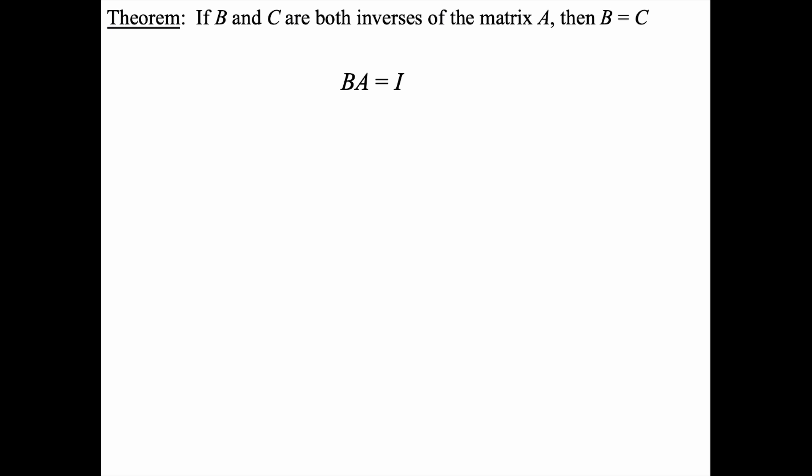Well since we're told that B is an inverse, if we pre-multiply on the left side of A by B, we would get BA equals the identity matrix.